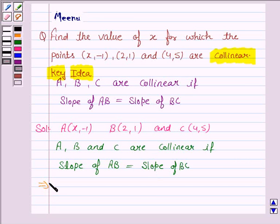Now, the slope of AB is given by y2 minus y1 that is 1 minus minus 1 upon x2 minus x1 that is 2 minus x. And slope of BC is given by 5 minus 1 upon 4 minus 2.